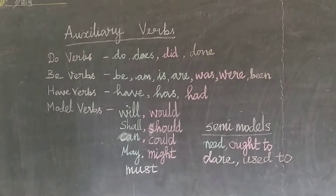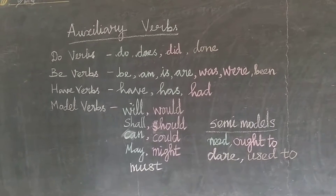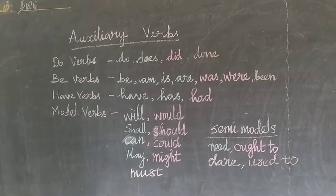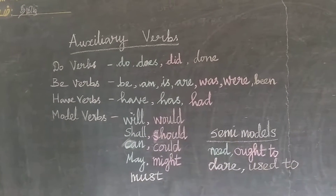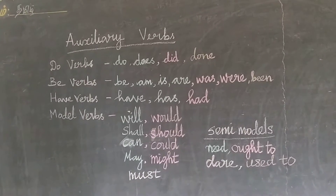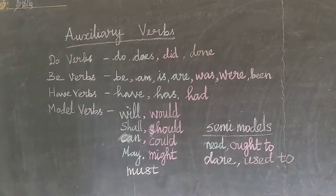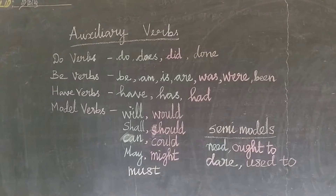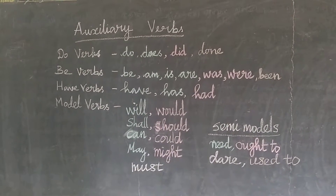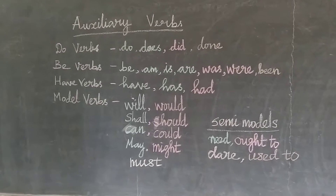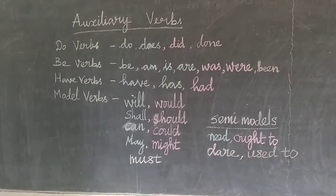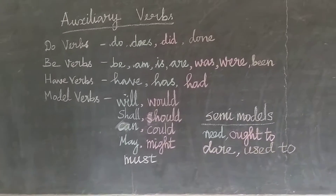An auxiliary verb helps the main verb and is also called a helping verb. That action happened in the past, or is happening in the present, or it will happen in the future. So an auxiliary verb helps the main verb, and it is called an auxiliary verb or helping verb.